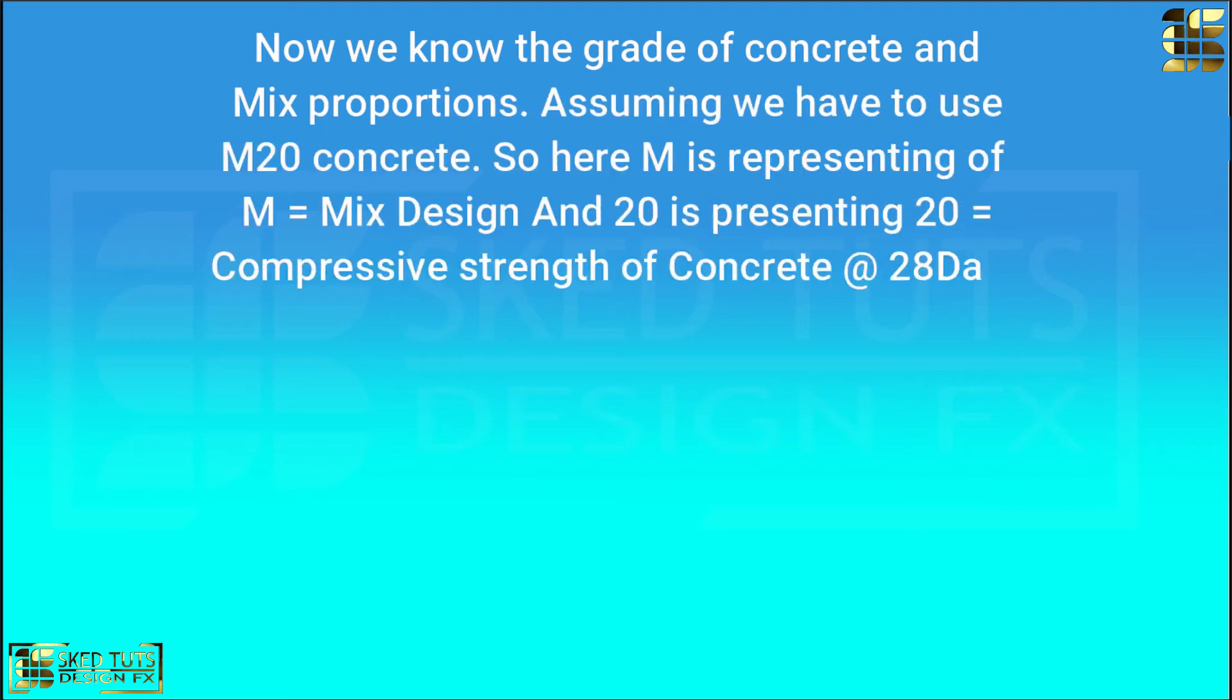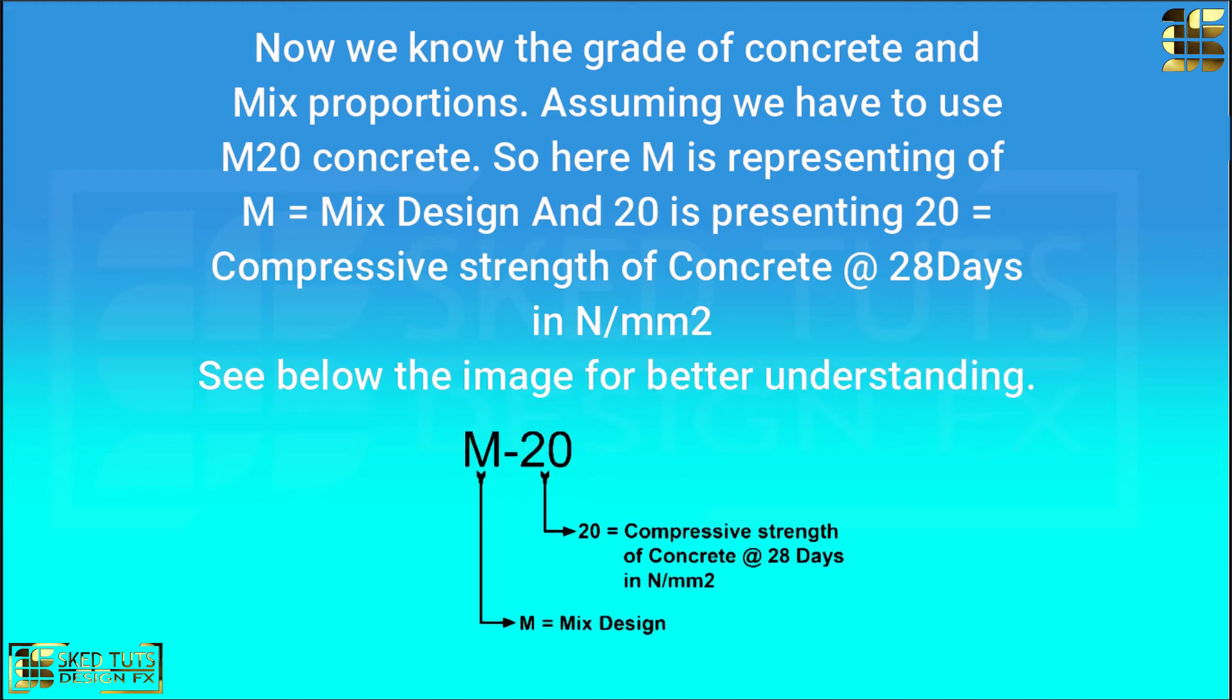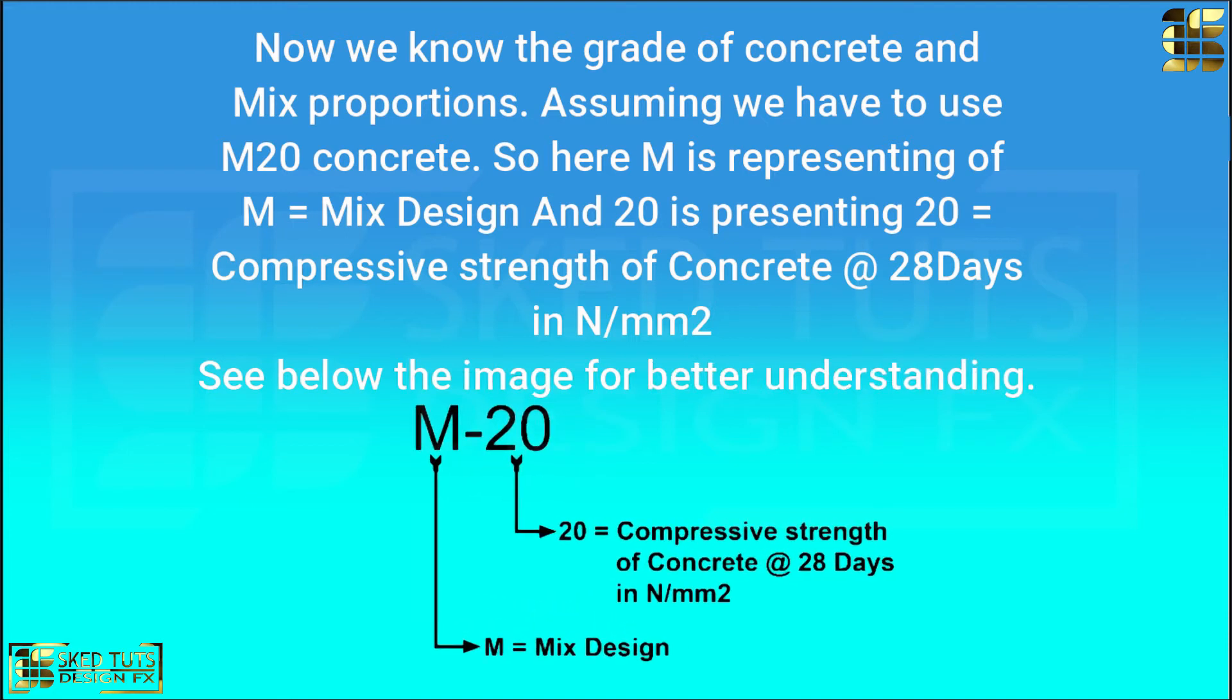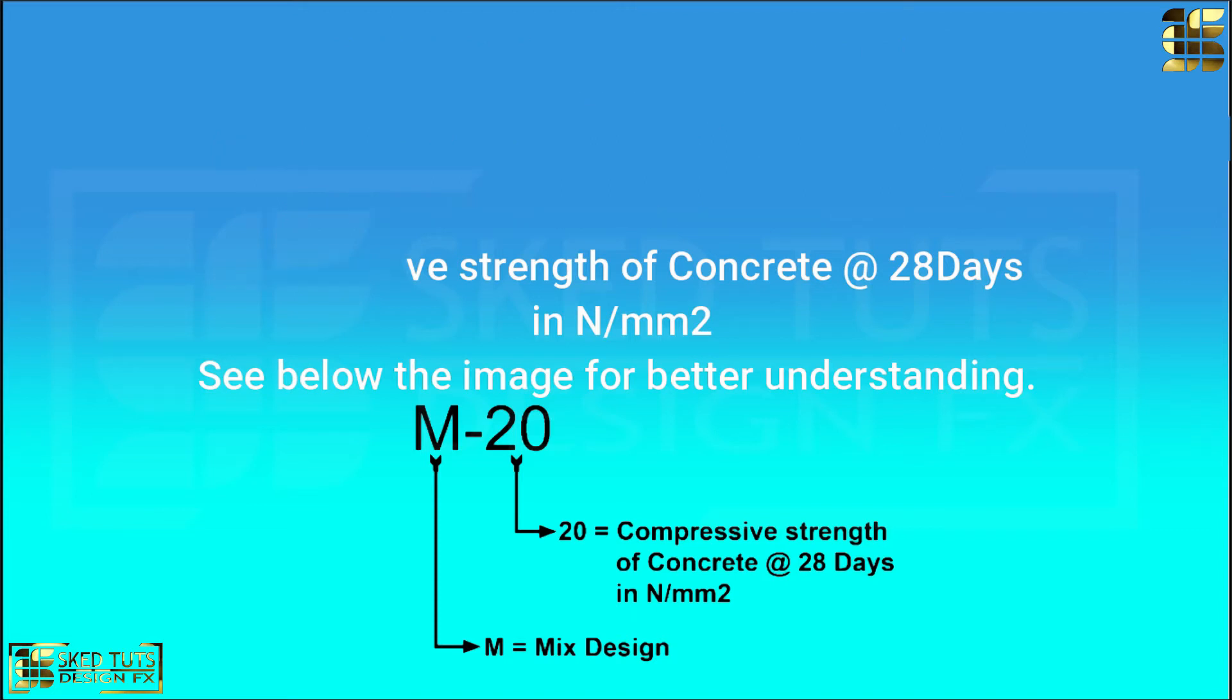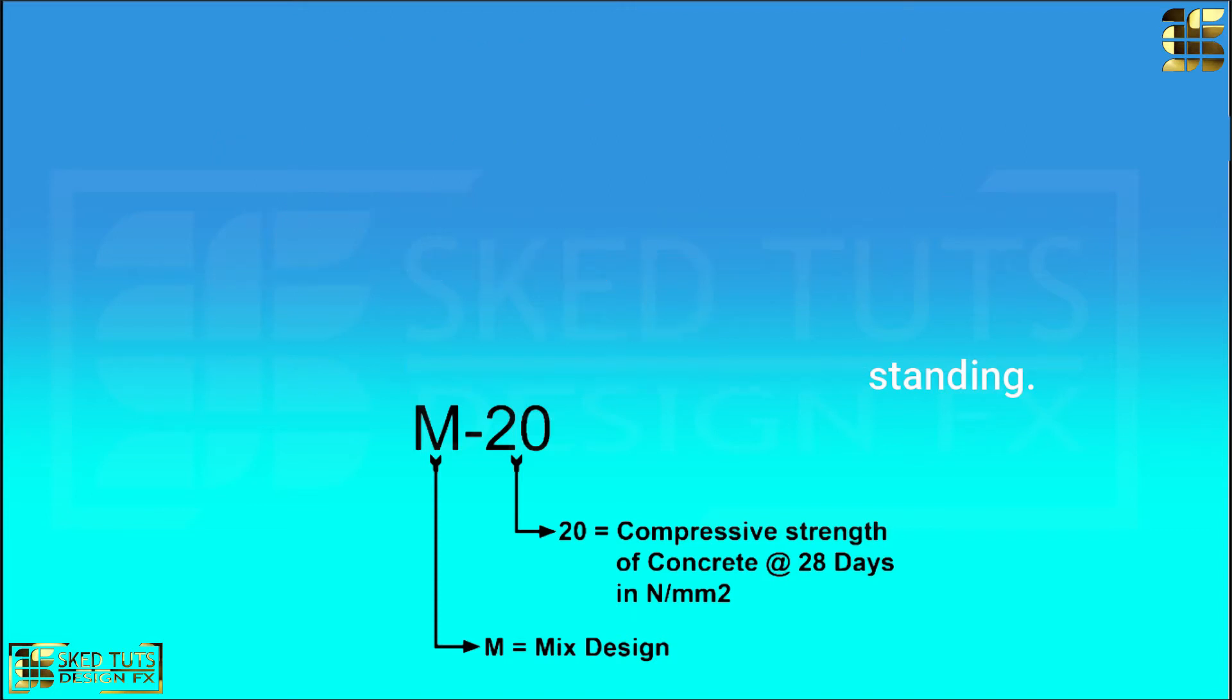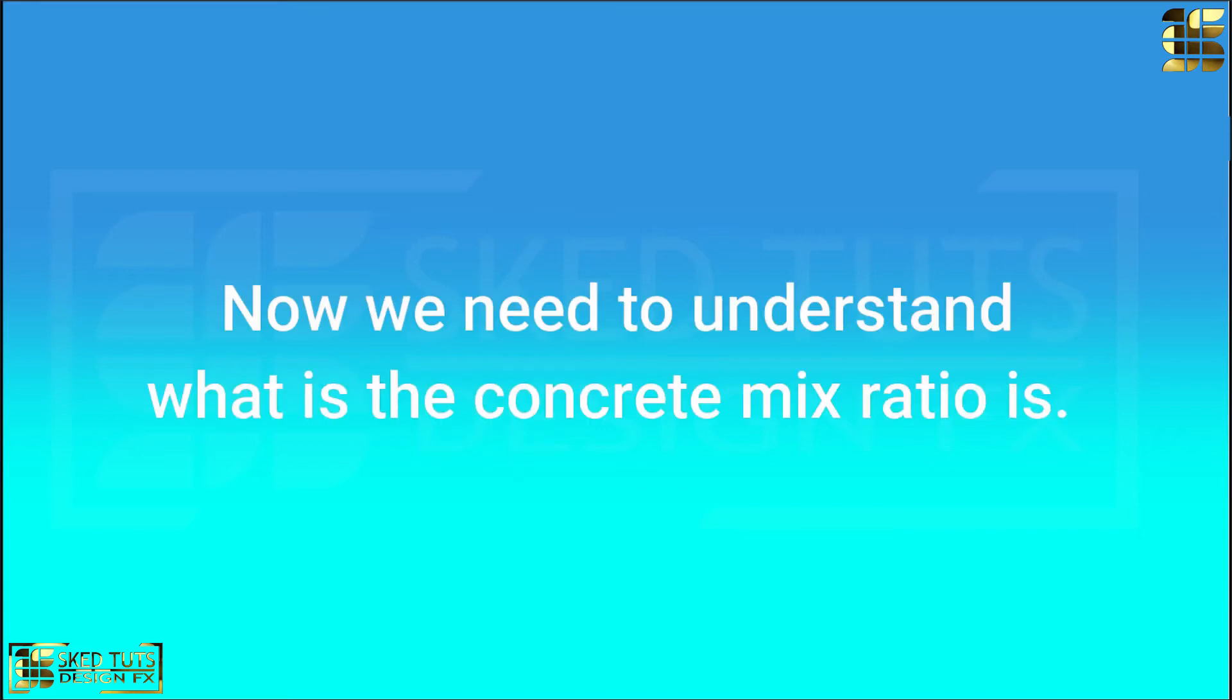Assuming we have to use M20 concrete. So, here we know the grade of concrete and mix proportion. So, here M is representing of mixed design and 20 is represent of compressive strength of concrete at 28 days in N/m². See this image for better understanding. Now, we need to understand what are the concrete mix ratios.